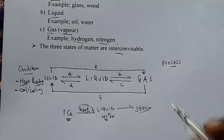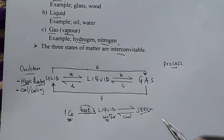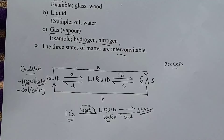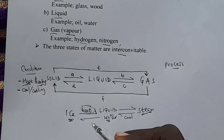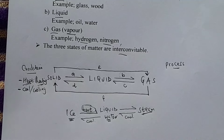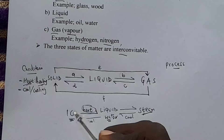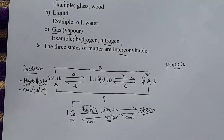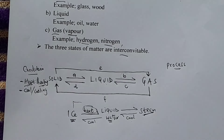So during the exam, if the teacher asks you to state the condition for process A or C, you say either heating or cooling. To conclude: if you have ice and want to convert directly to steam, you heat. If you go from steam directly back to ice, you cool.